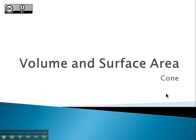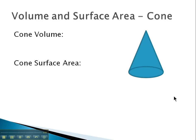In this video, we're going to find the volume and surface area of a cone. The formula we use for the volume of a cone is one-third times pi times the radius squared times the height.